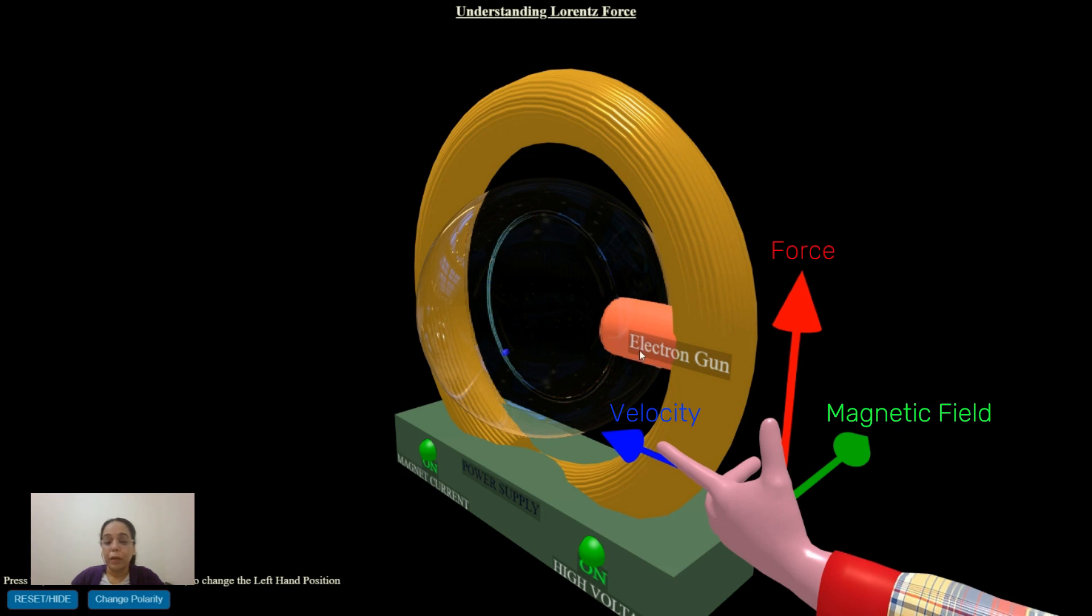If the energy or the velocity of the particles were higher, it would traverse a much larger circular path. If you have lower energy, the path taken would be much smaller.